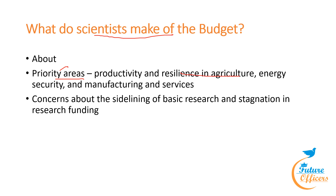Under priority areas, productivity and resilience in agriculture is a key focus. The Union Budget emphasizes transforming agricultural research to enhance productivity and climate resilience. Initiatives such as speed breeding platforms have been established to accelerate the development of climate-resilient crop varieties, allowing multiple generations of crops to grow in a single year.